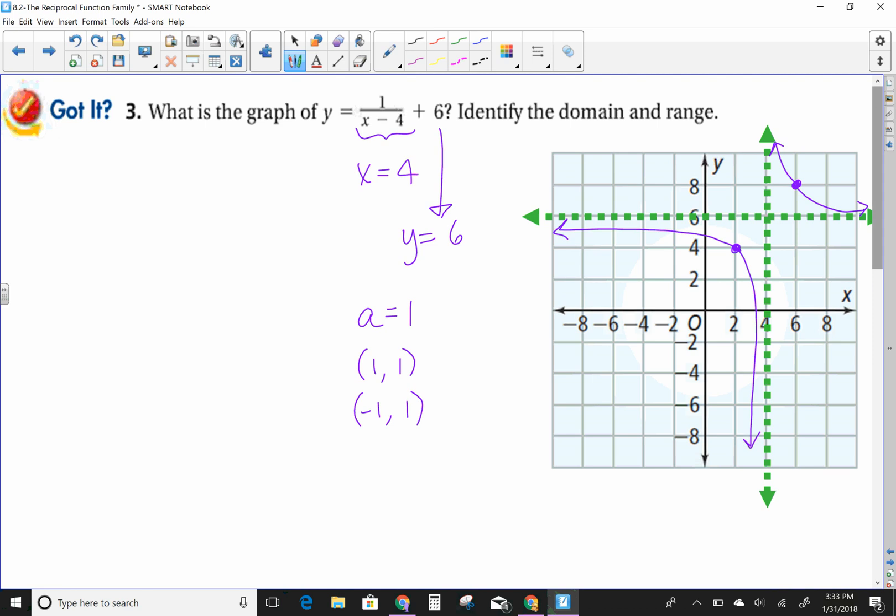Domain and range. So what's the domain? So my domain is always all real numbers except x cannot equal, what's my x asymptote? 4. And my range, all real numbers except for y cannot be 6. So that's my domain and range.